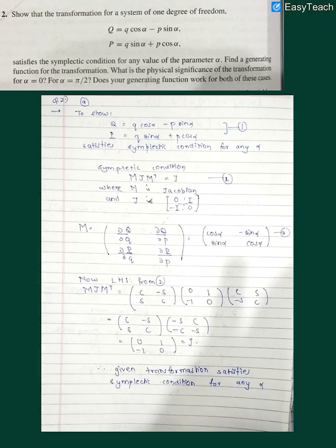Hello, so let us start with the second question of chapter 9 from Goldstein Classical Mechanics. The question is, show that the transformation for a system of one degree of freedom with capital Q as small q cos alpha minus p sin alpha and capital P as small q sin alpha plus p cos alpha.